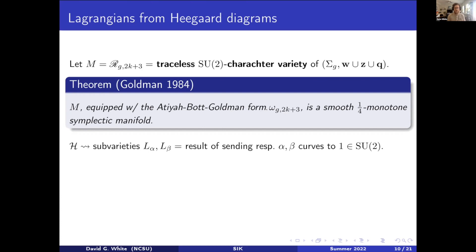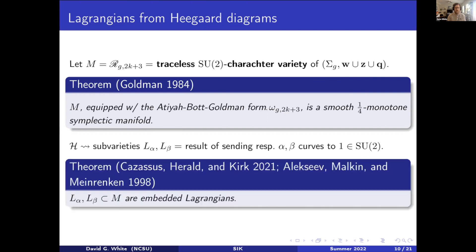From the Heegaard diagram, we get subvarieties L_α and L_β in M, each of which is the result of sending the respective set of attaching curves to 1 in SU2. There are a few different results that one can use to deduce that these are embedded Lagrangians in M. In general, it's sort of well-known now that under the right circumstances, if you have a tangle — that is, some properly embedded one-manifold in a three-manifold — then the traceless character variety of the three-manifold relative to that properly embedded one-manifold embeds into the traceless character variety of the boundary relative to the points where the one-manifold intersects the boundary.